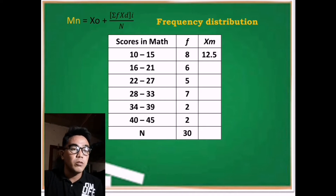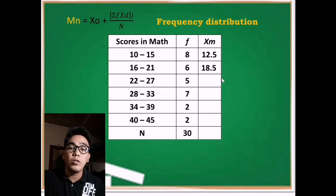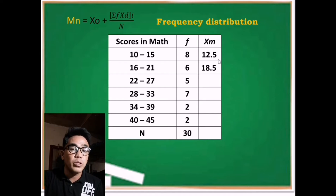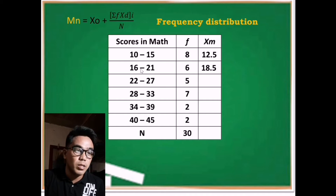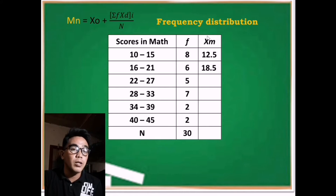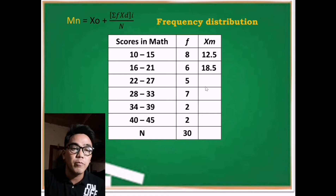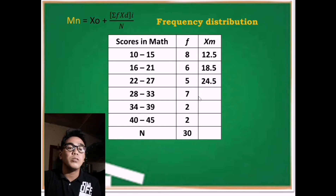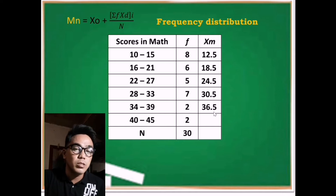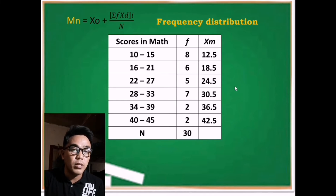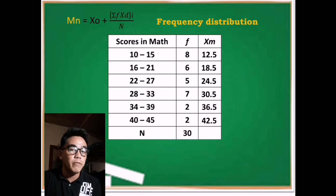For the second row, 16 plus 21 is 37, so half of it is 18.5. Observing the first two class marks, the difference between them is 2.5, so we simply add 2.5 to get each subsequent class mark: 24.5, 30.5, 36.5, and 42.5. This is how we get all the class marks for the frequency distribution.